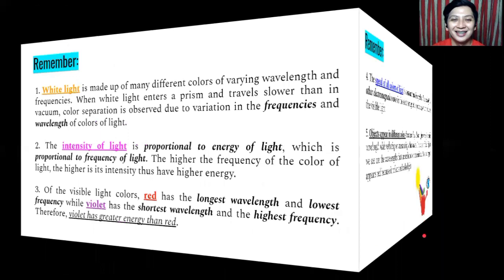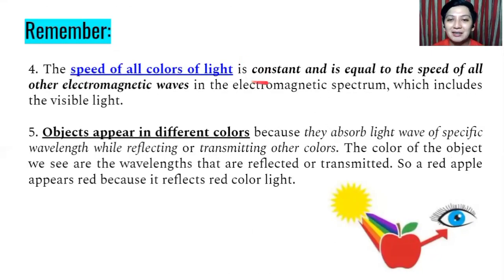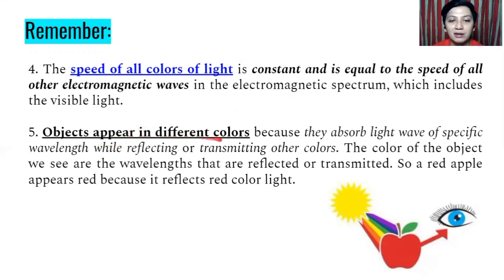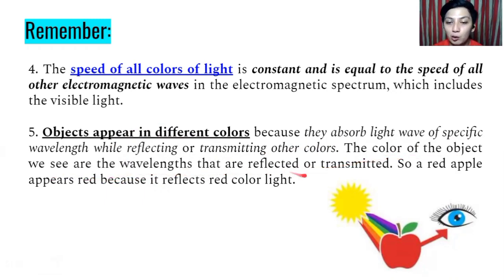The speed of all colors of light is constant and equal to the speed of all other electromagnetic waves. Objects appear in different colors because they absorb light waves of specific wavelengths while reflecting or transmitting other colors. The colors we see are the wavelengths reflected or transmitted to our eyes — so a red apple appears red because it reflects red light.